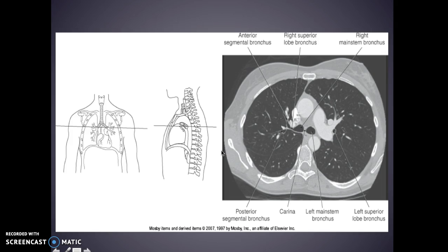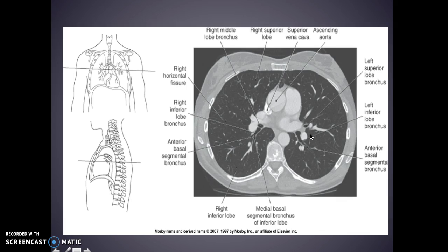Looking here, the main thing is your carina with your right and left main stem bronchus. Here's your superior vena cava with your ascending aorta, and this should be your pulmonary trunk — that's about it for this image.